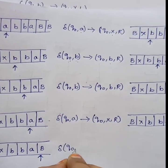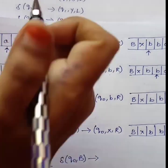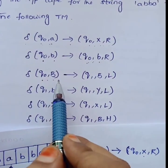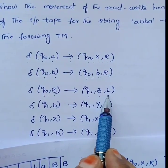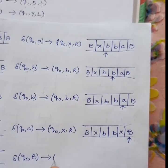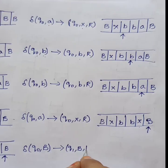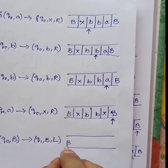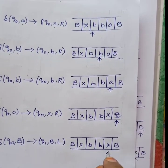Now the read/write head indicates the blank symbol B. Delta of Q0 comma capital B — here in Q0 state with input B (the blank symbol), there is a transition given in the Turing machine. From Q0, the state changes to Q1, B remains the same, and the head moves one step left. So now in state Q1, B remains the same and the read/write head moves one step left.